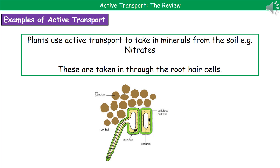Our third and final example is in plants. Don't forget that biology isn't just about animals — plants also carry out many processes. Active transport is vital for a plant's survival because the soil contains much lower concentrations of certain minerals, like the nitrates that plants need, than are found inside the plant cell. So we need to use active transport to move nitrates from the soil — where they're in low concentration — to the inside of the root hair cells, where they're in high concentration. Without active transport, plants couldn't get the nitrates they need.